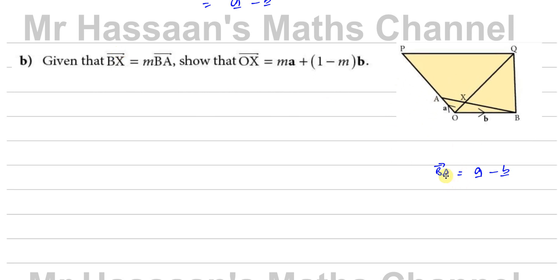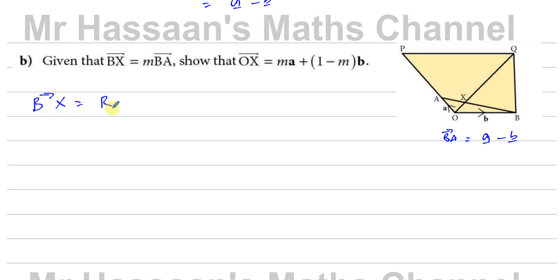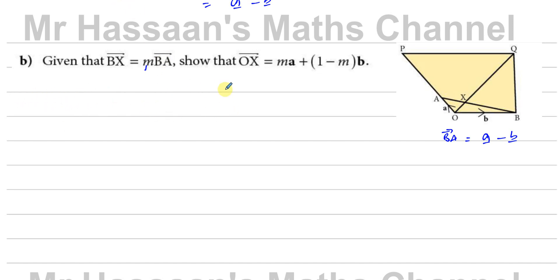The vector BA is A minus B. For part B, given that vector BX equals M times vector BA, where M is some scalar, we need to show that OX equals MA plus (1 minus M)B. To find OX, we go from O to B and then from B to X: OX equals OB plus BX. We know OB is vector B, and BX is M times BA, which is M times (A minus B).